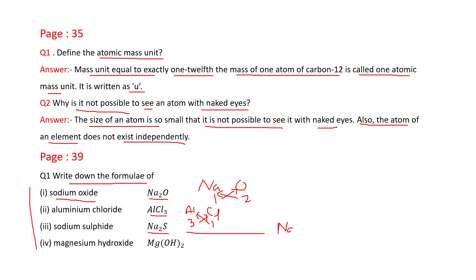For sodium sulfide: sodium has valency 1, sulfide has valency 2 — interchange to get Na₂S. For magnesium hydroxide: magnesium (Mg) has valency 2, hydroxide (OH) has valency 1 — interchange to get Mg(OH)₂, where OH is placed in brackets with subscript 2.